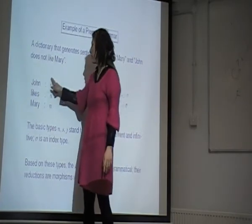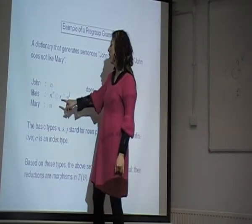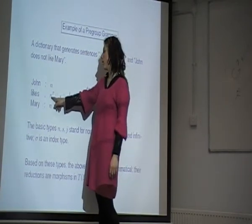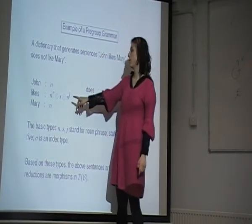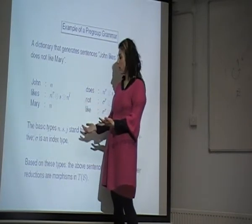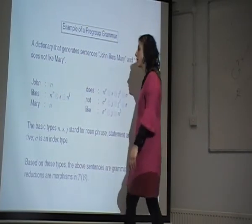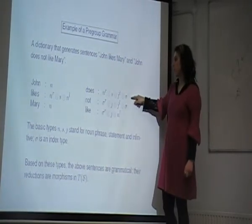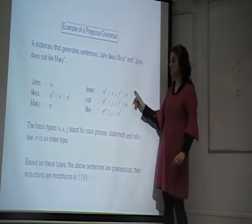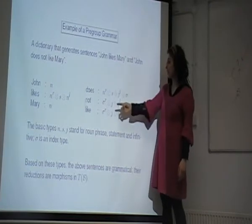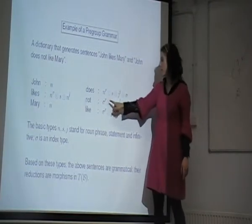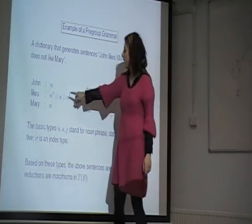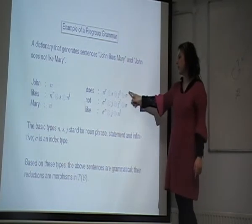I have some examples. A minimal dictionary that generates two sentences, John likes Mary and John does not like Mary, looks like this. To John, I assign type n. To likes, this type: it's looking for an argument of type n to its left and an argument of type n to its right. If you give those to 'likes' in the correct order, they will produce something of type s. Mary is n. For 'does', one has to be a bit smarter to come up with a type. Maybe it cannot be read intuitively as easily. Similarly for 'not' and the infinitive version of 'like'. These types are exactly the things that are going to enable this transfer of information. So n is noun, s is sentence, j is infinitive sentence, and these are some index types of glues.